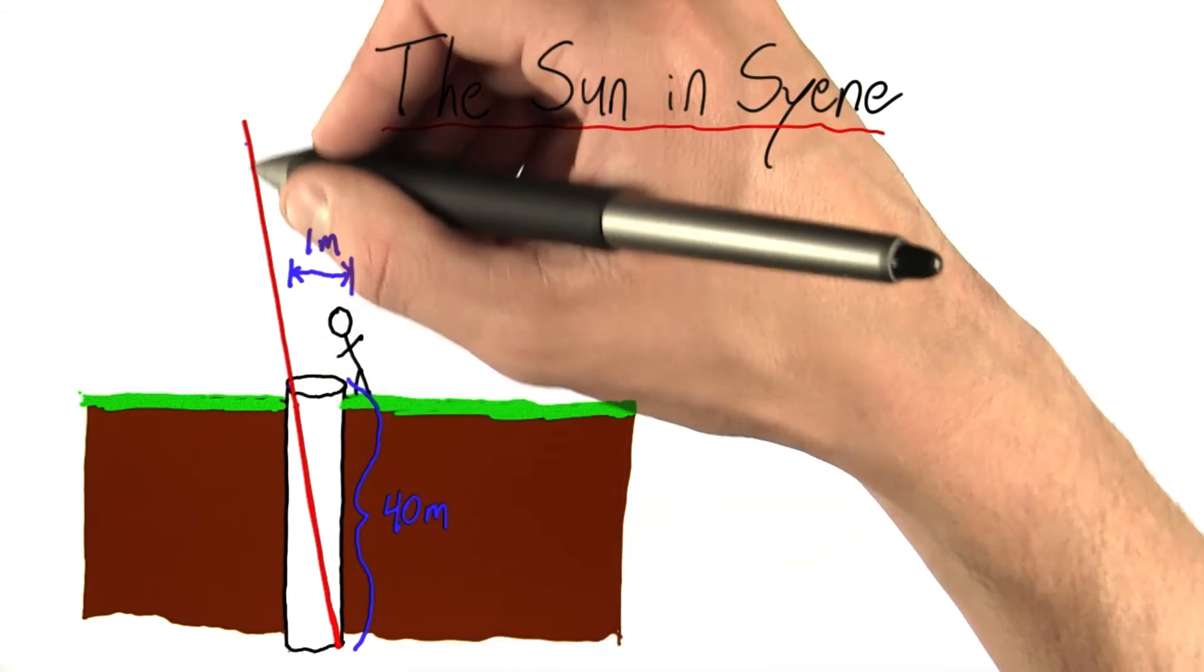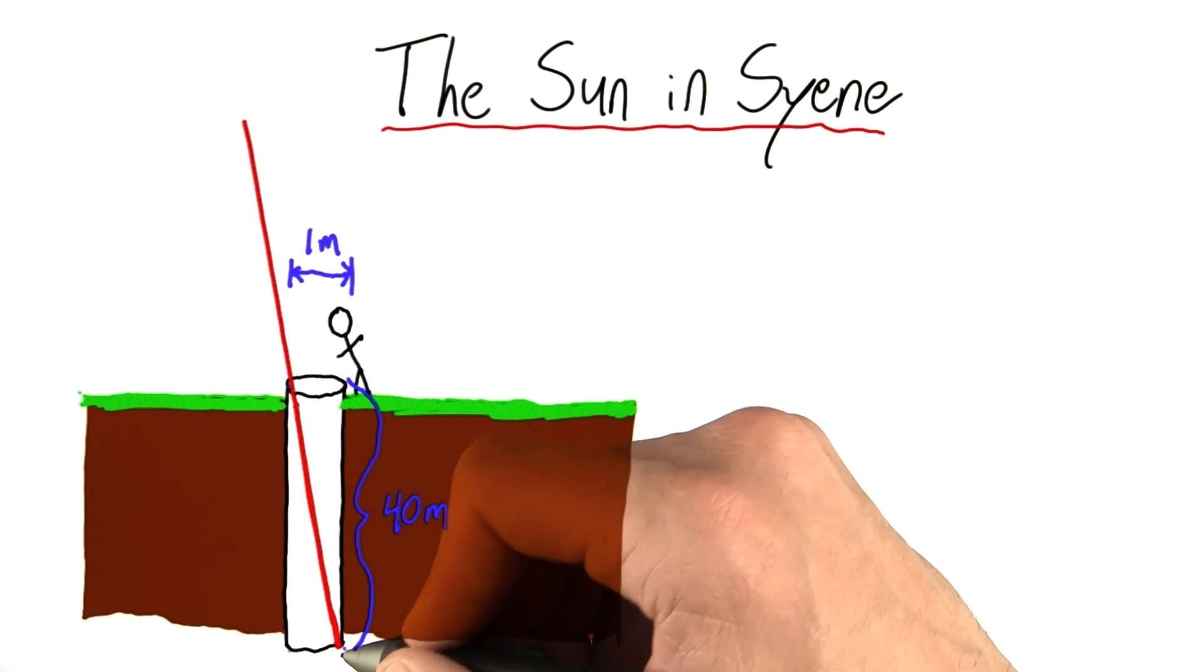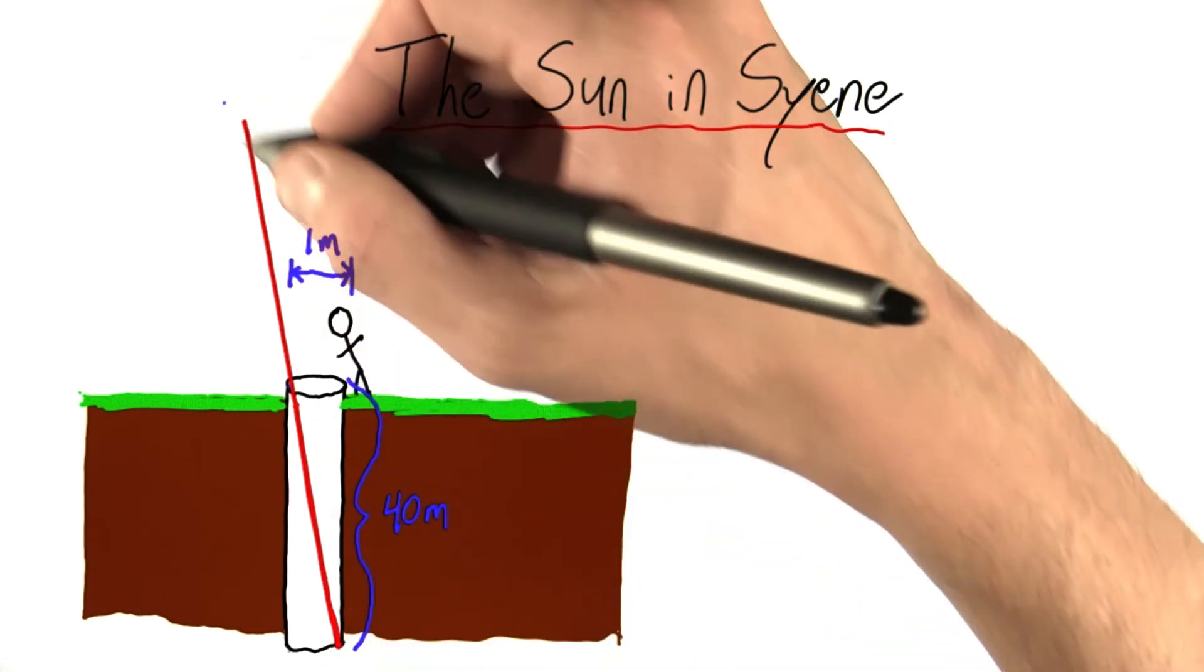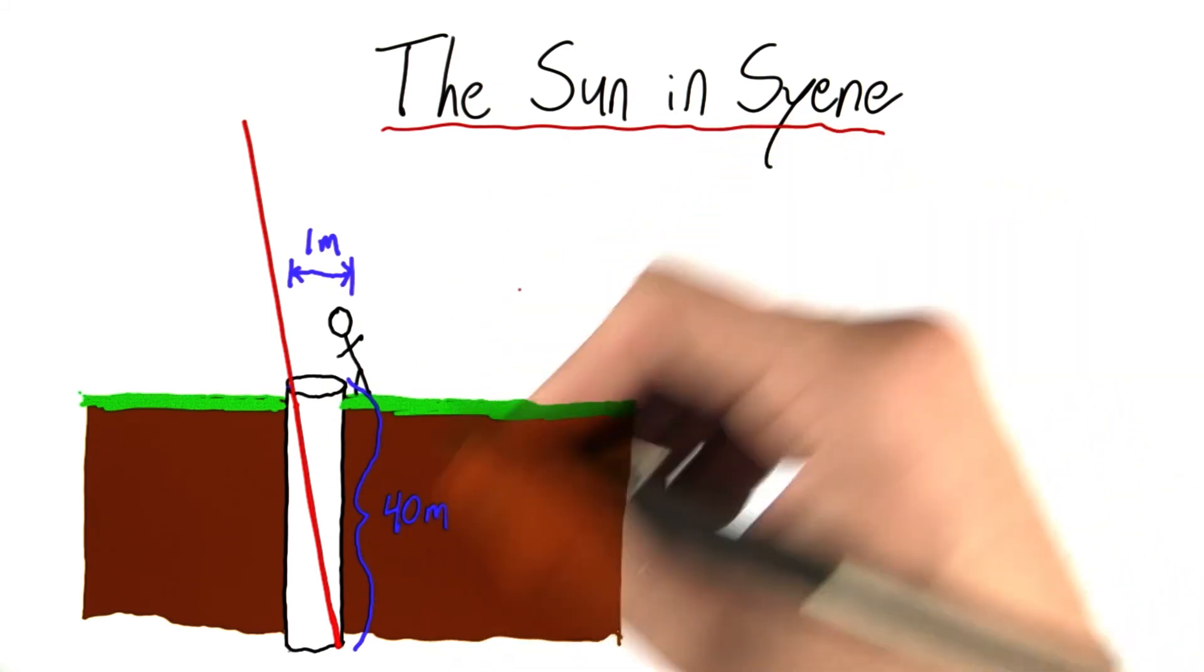We have an extreme case solar ray coming down and just barely illuminating the bottom of the well. Now, what angle does this correspond to? We know it's not quite vertical.